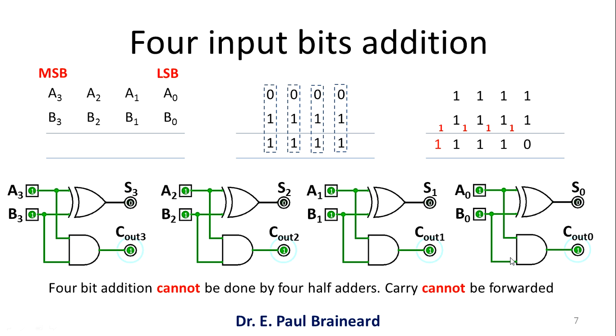As I said earlier, for 1 bit addition from 2 inputs, the sum operation can be implemented by XOR gate and the carry operation can be implemented by AND gate. Here, each input is having 4 bits.